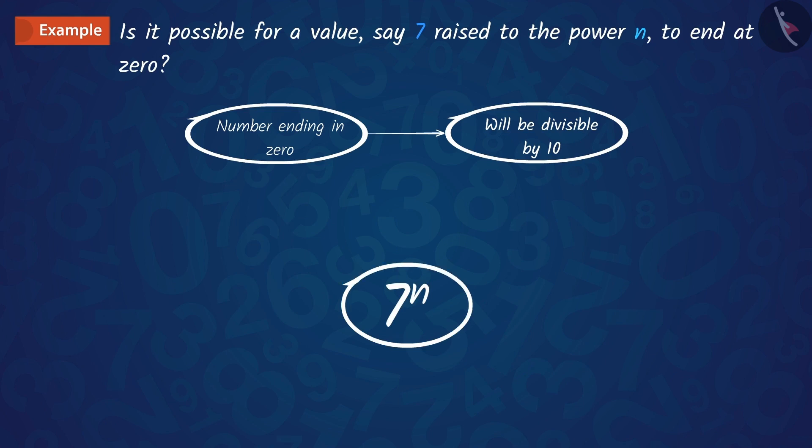Based on this, we can say that there is no natural number which has the power of 7 raised to n whose last digit is 0. Let us look at another example.